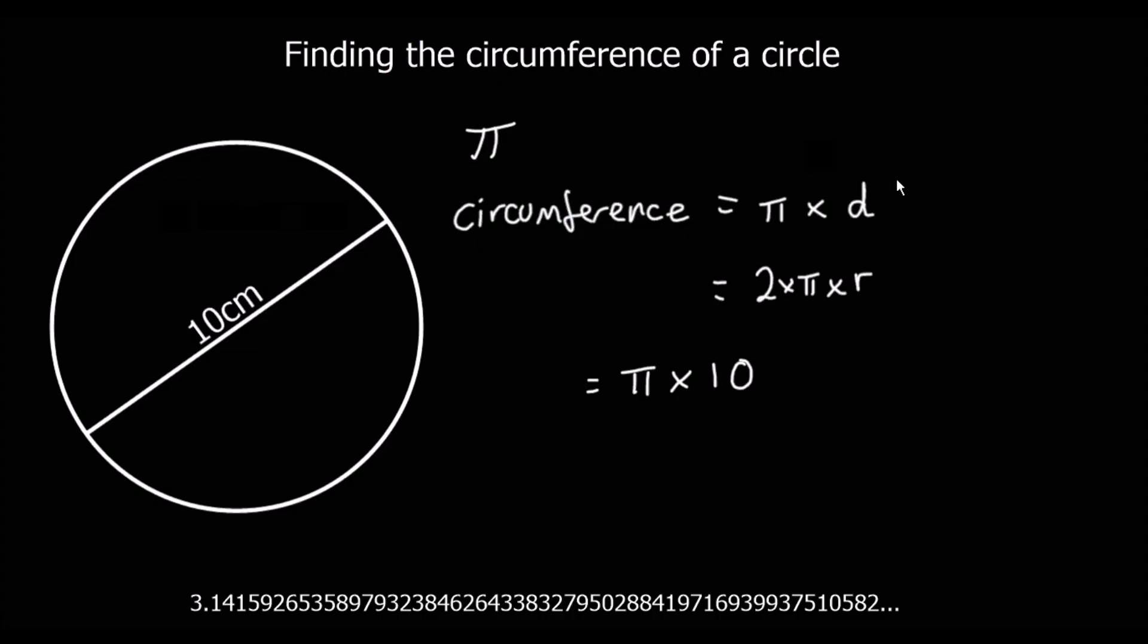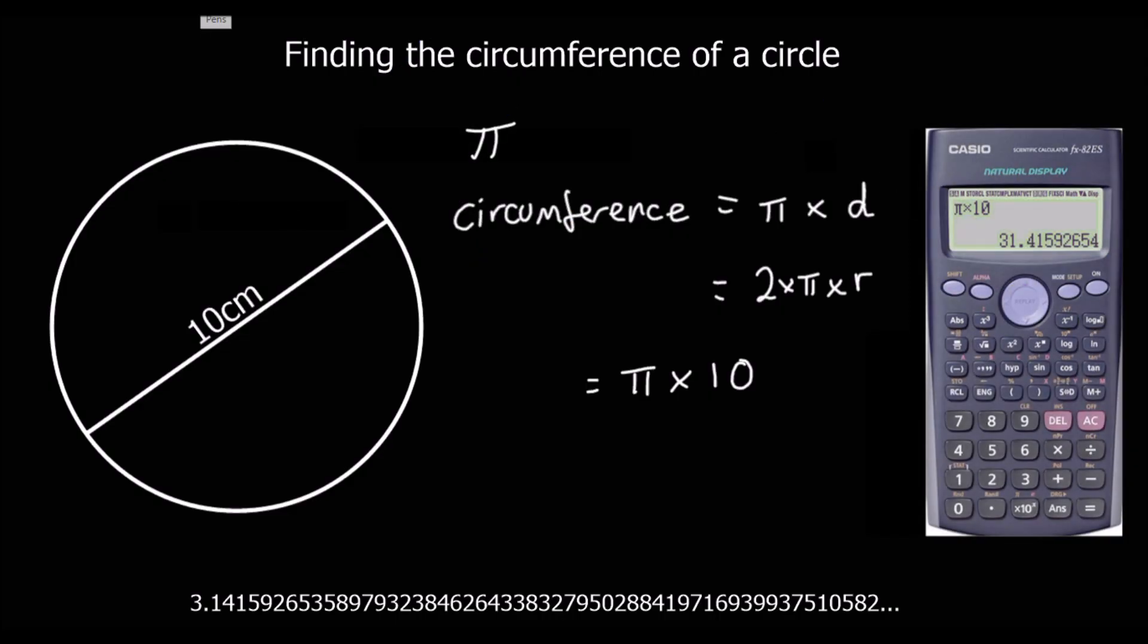So if we type that in the calculator, what I've done is I've used the pi button in this case, which is found by doing shift and then this button down here. You can see just about the pi there. So shift this button times 10, and that gives us 31.4, and I'll do that to one decimal place.